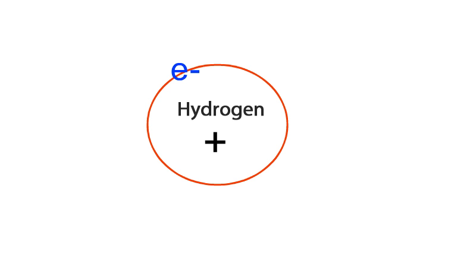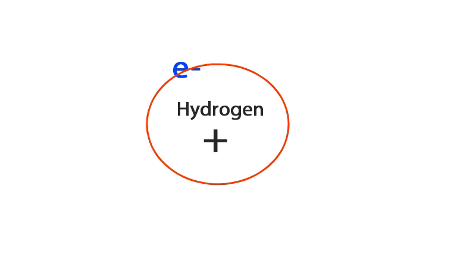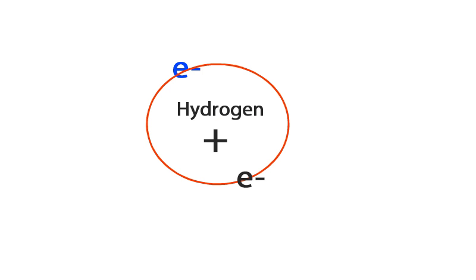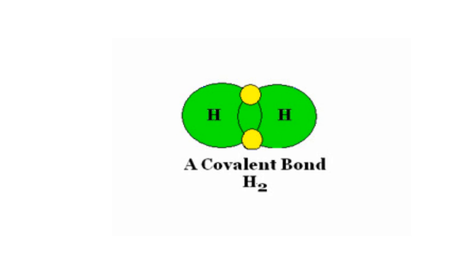Recall from the previous video how many electrons are needed to fill the first electron shell. You are correct if you said 2. Based on what you now know about electron distribution, is the hydrogen atom stable or unstable? It is unstable because its valence or outermost electron shell is not filled to capacity with electrons. Hydrogen will either gain, lose, or share one electron to become stable.